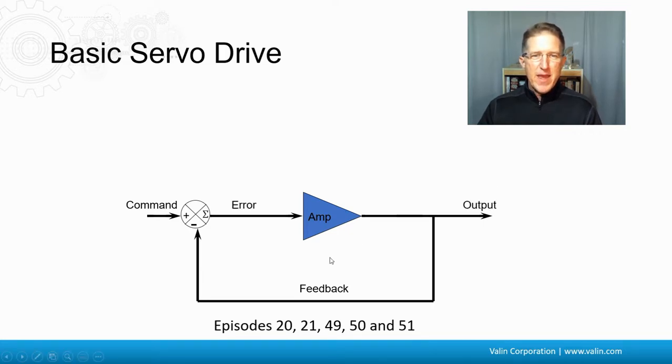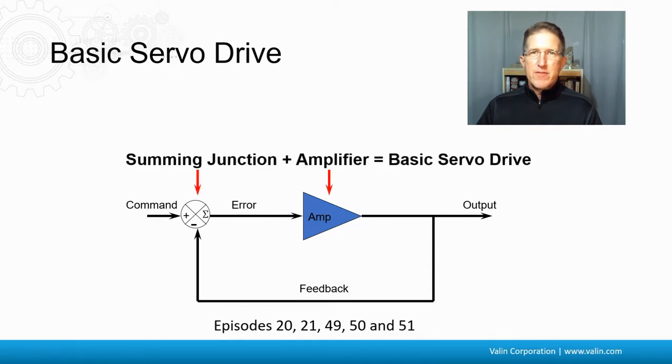The difference between the command and the feedback gives an error. That command error goes into the amplifier and that creates the output. We have a summing junction, an amplifier, and that gives just the most basic servo drive.